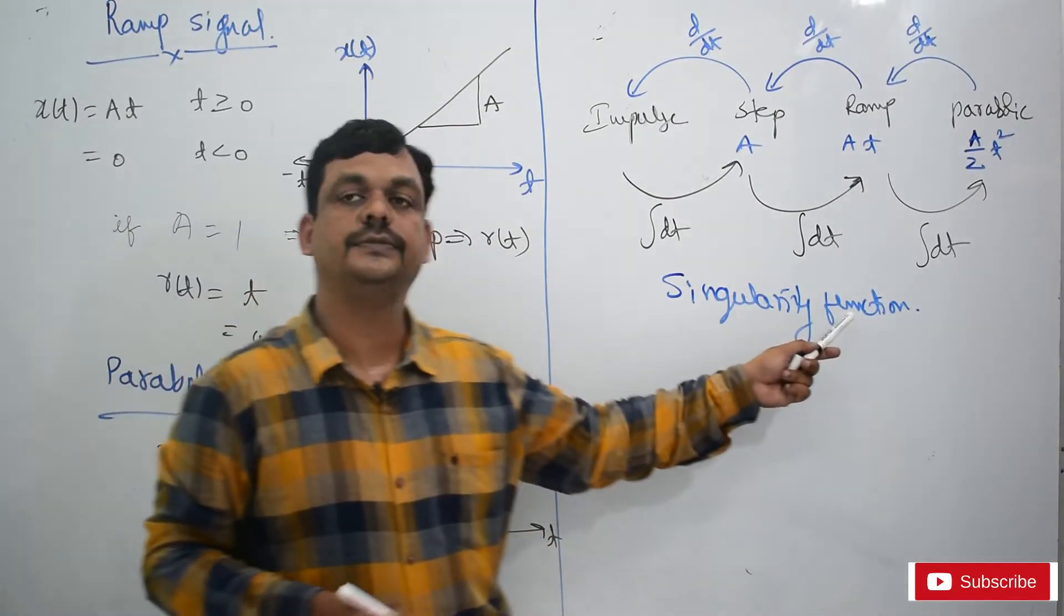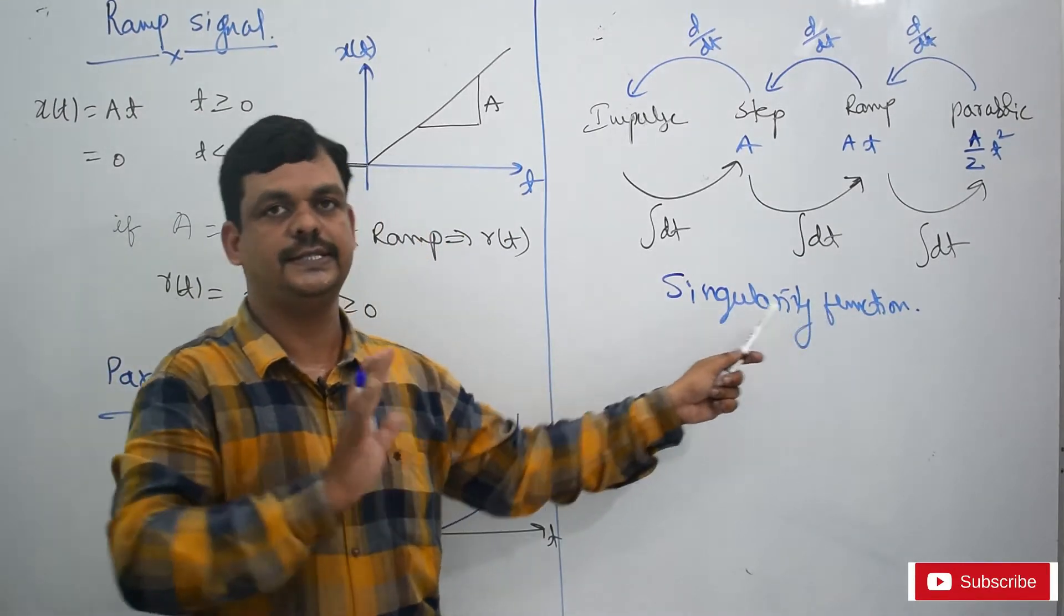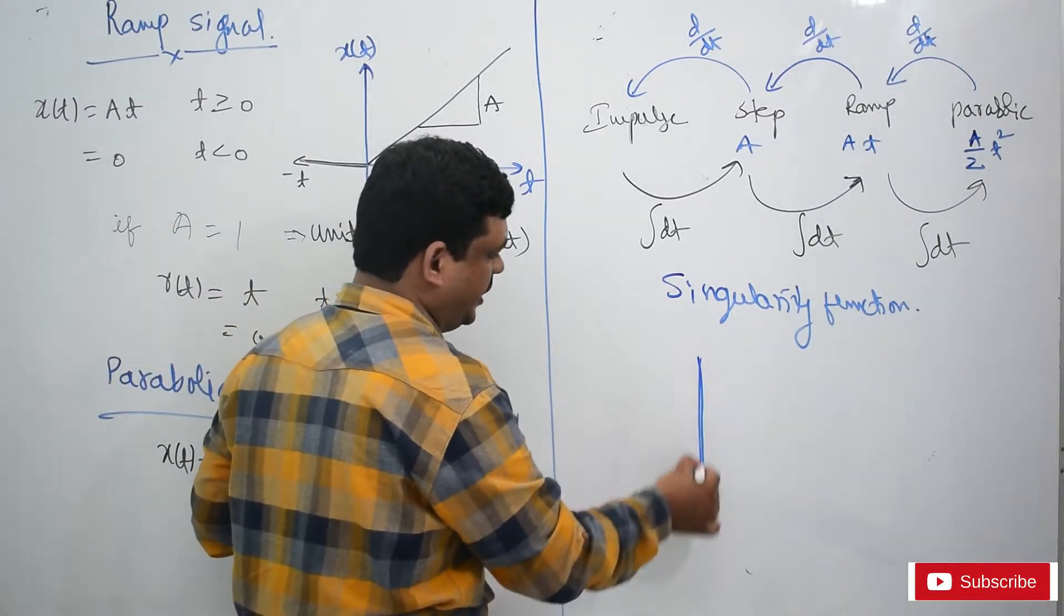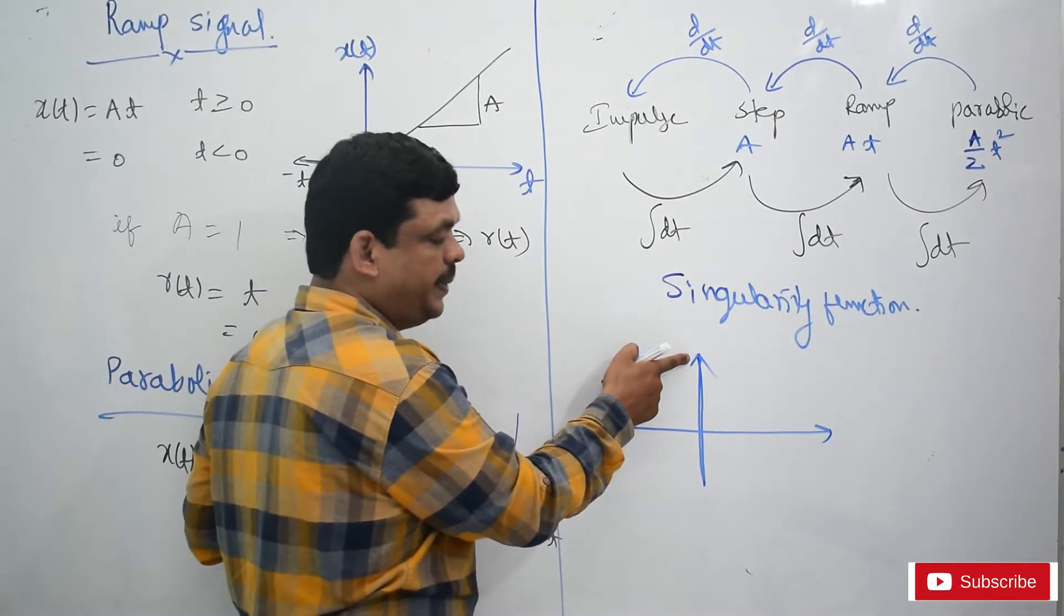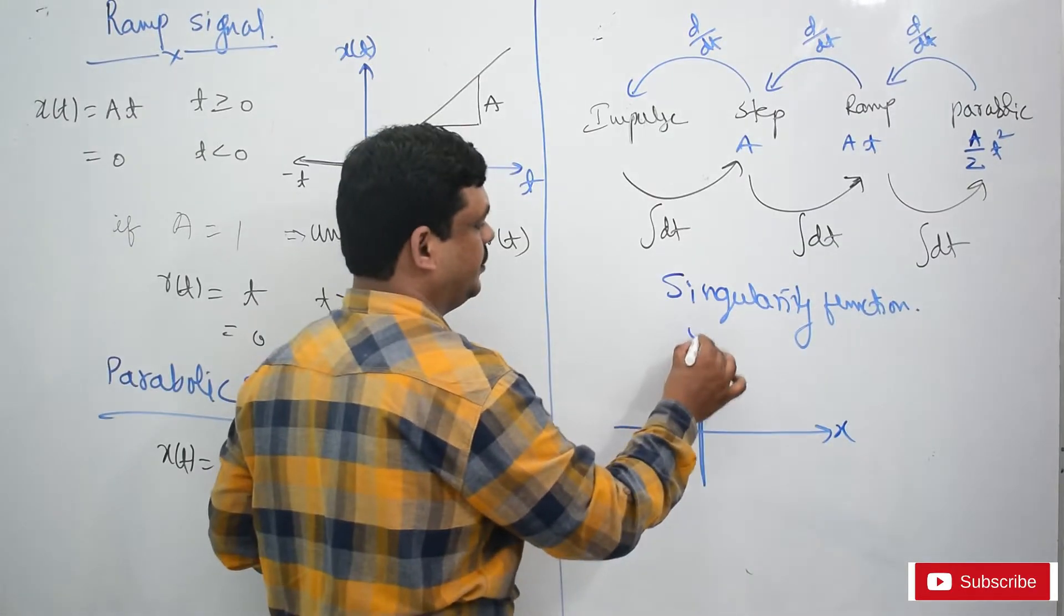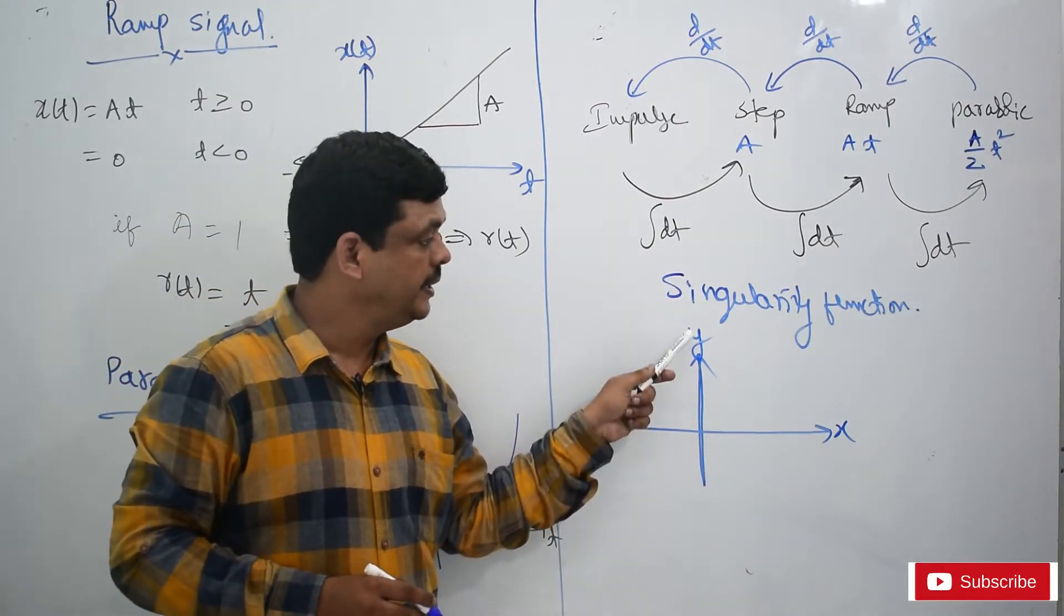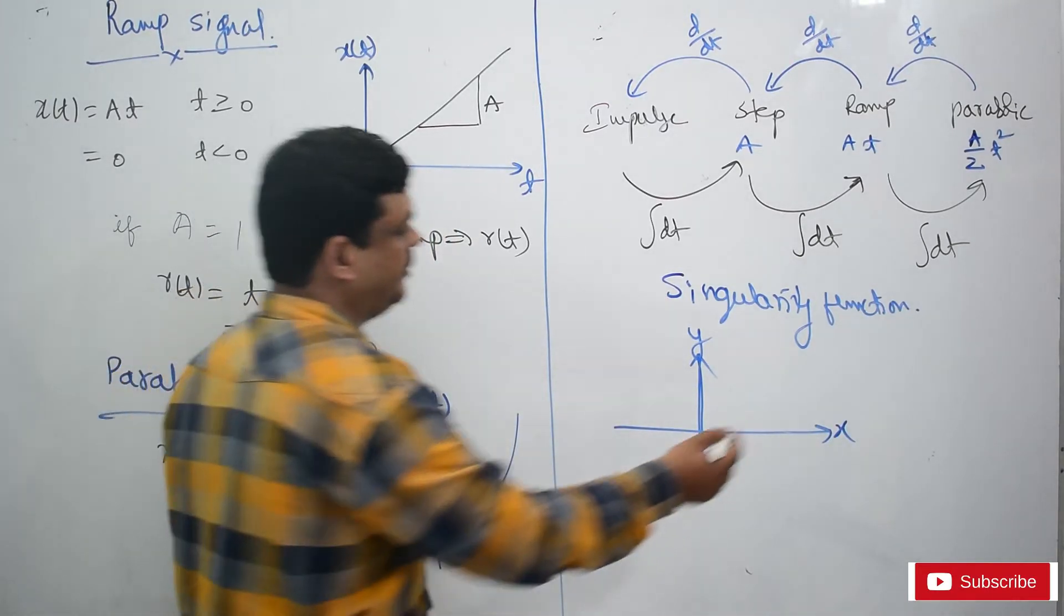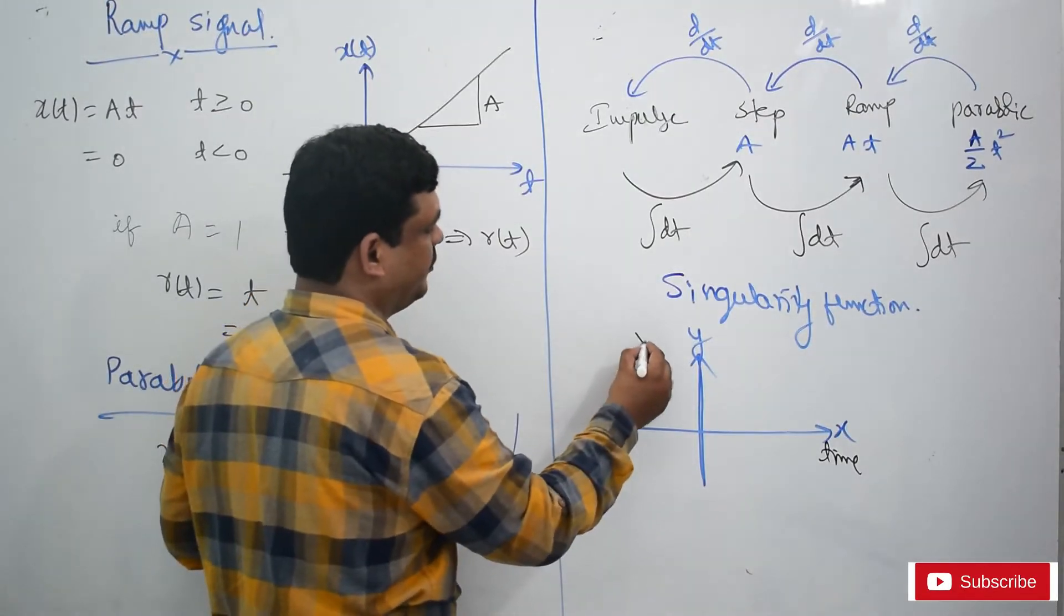Here I am writing function or sometimes signal. Signal and function both are the same here. According to the mathematics point of view, the function definition explains it has one dependent variable and one independent variable. This is x and this is y. This should always be dependent and this should be independent. This is changing with respect to this. Here in this signal, we are assuming this is the time axis and this is some function name, voltage here.